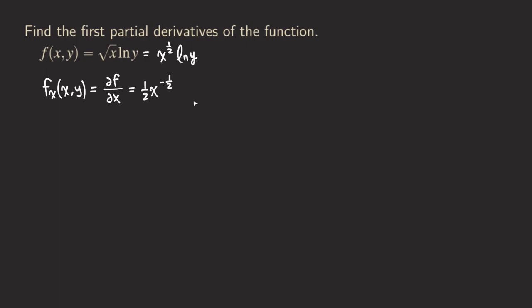You may ask: what about the ln(y)? Because y is being treated as a constant, ln(y) is also a constant — it's a constant multiple of our function x to the 1/2, so we just leave it there. This is already the answer. If you want to simplify, we have ln(y) in the numerator, and in the denominator we have 2. Because x has a negative exponent, we move it to the bottom and convert it back to a square root, giving us square root of x. That is our fx.